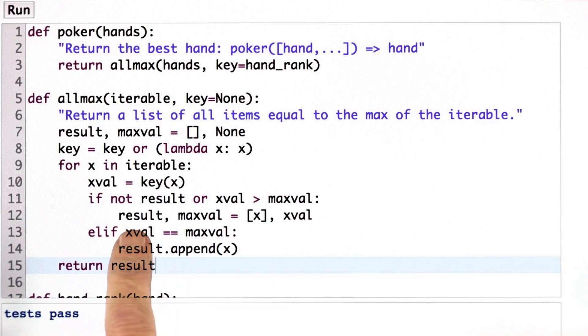then I want to create the result to be this list of the single item x, the value that the first one that I've looked at. And I want to set the max value to be equal to that x value.